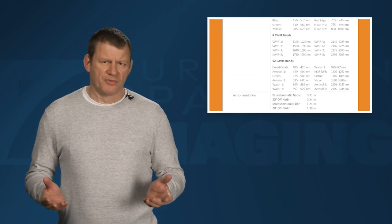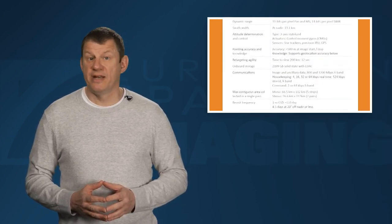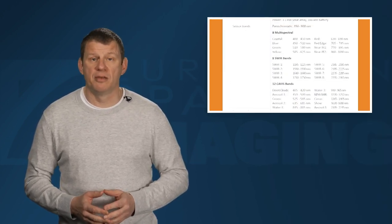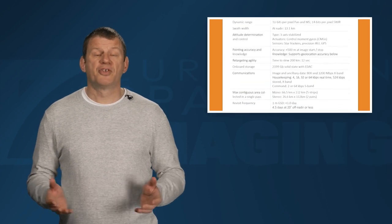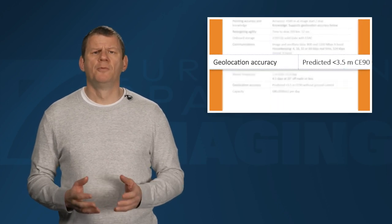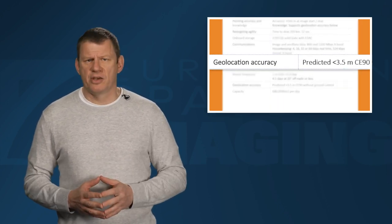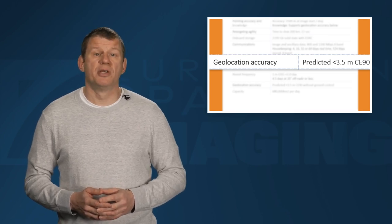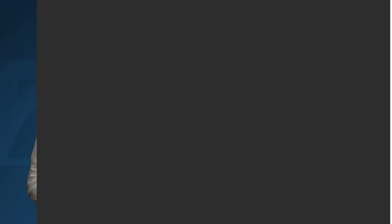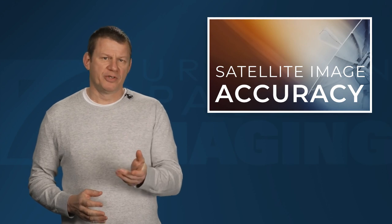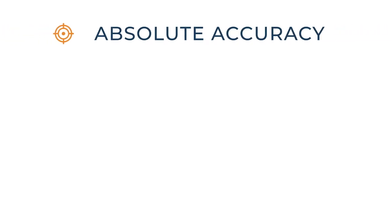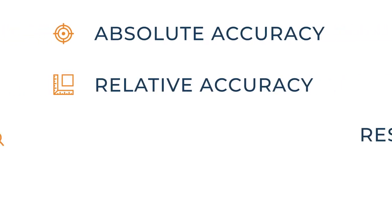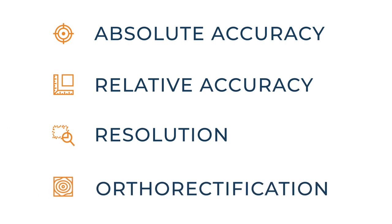The accuracy of satellite imagery is often hidden on a single line in a vast table of other technical specifications. So let's shine a light on image accuracy and better understand the benefits that an accurate image can provide. There are four important terms we need to discuss to understand the accuracy of satellite imagery: absolute accuracy, relative accuracy, resolution, and ortho rectification.